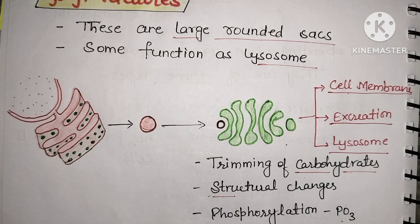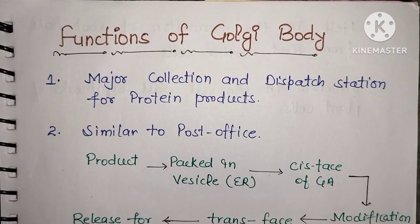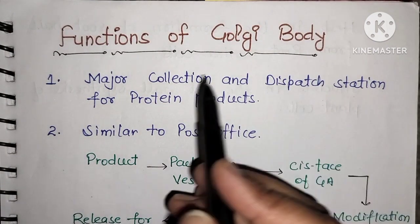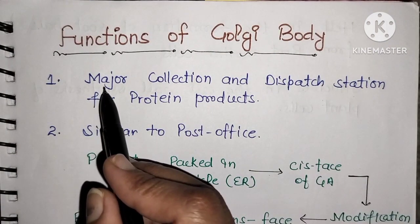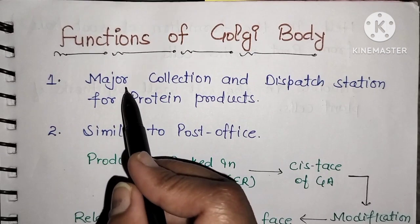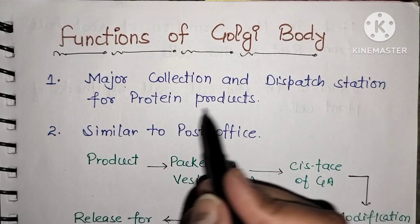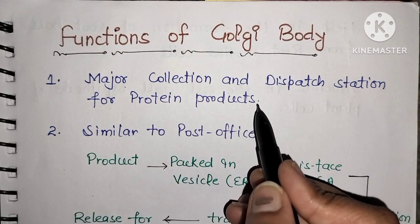Now let's look at the functions of the Golgi apparatus. The Golgi apparatus has many functions. It is a major collection and dispatch station for protein products, and it performs glycosylation of proteins.